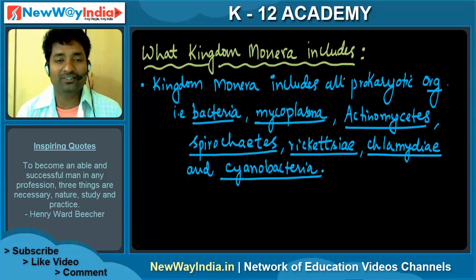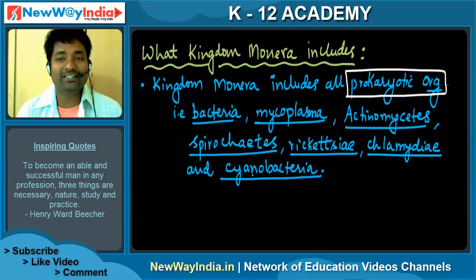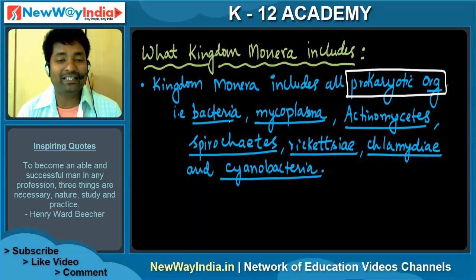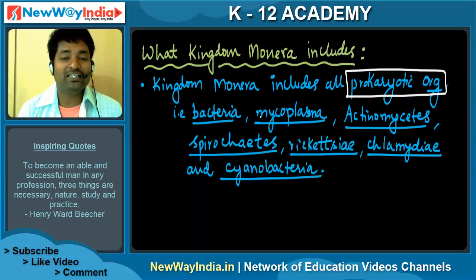Kingdom Monera includes all prokaryotic organisms — this is important. The remaining 4 kingdoms are eukaryotic; only Kingdom Monera is prokaryotic. It includes bacteria, Mycoplasma, Actinomycetes, Spirochetes, Rickettsia, Chlamydia, and Cyanobacteria. These are the organisms that Kingdom Monera includes.